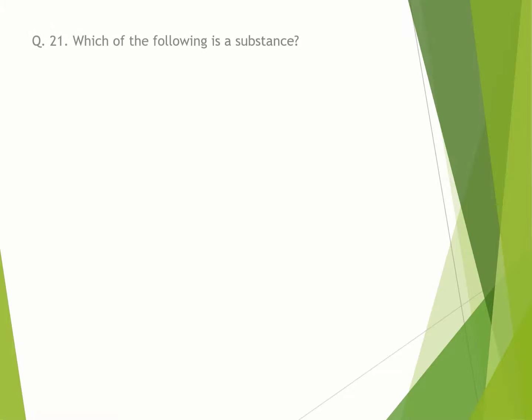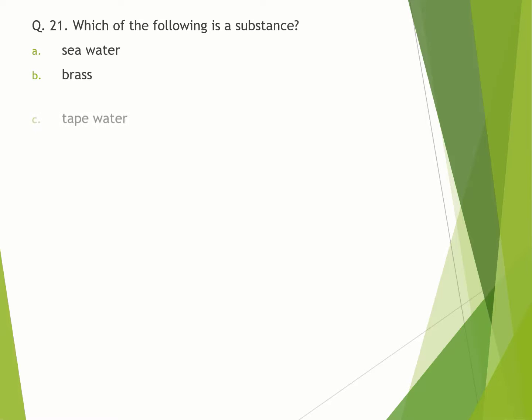Question number 21. Which of the following is a substance? A. sea water. B. brass. C. tap water. D. graphite. Correct option is D.